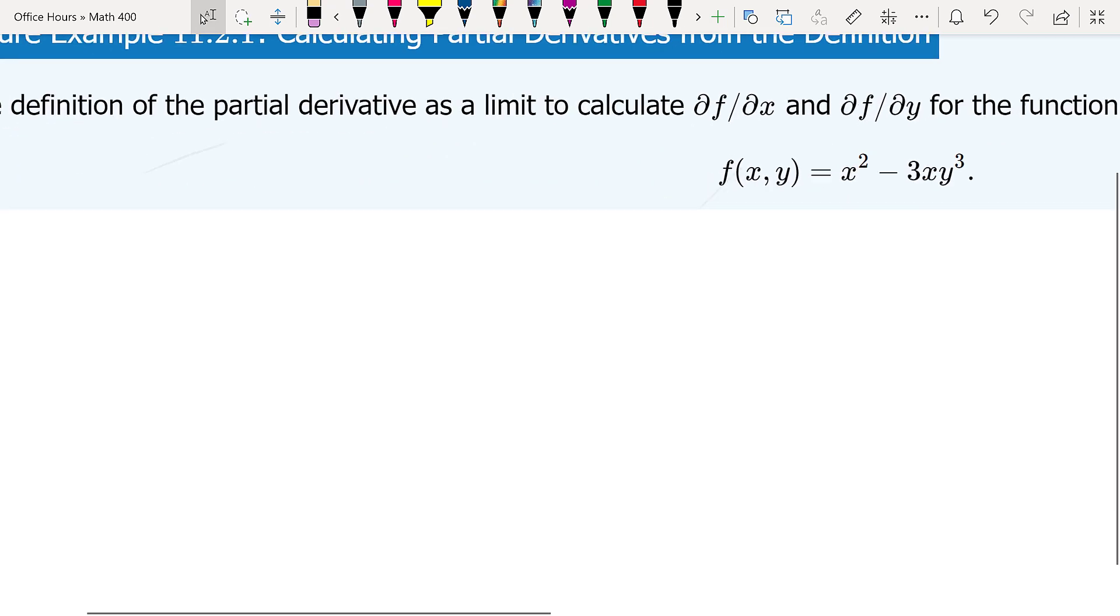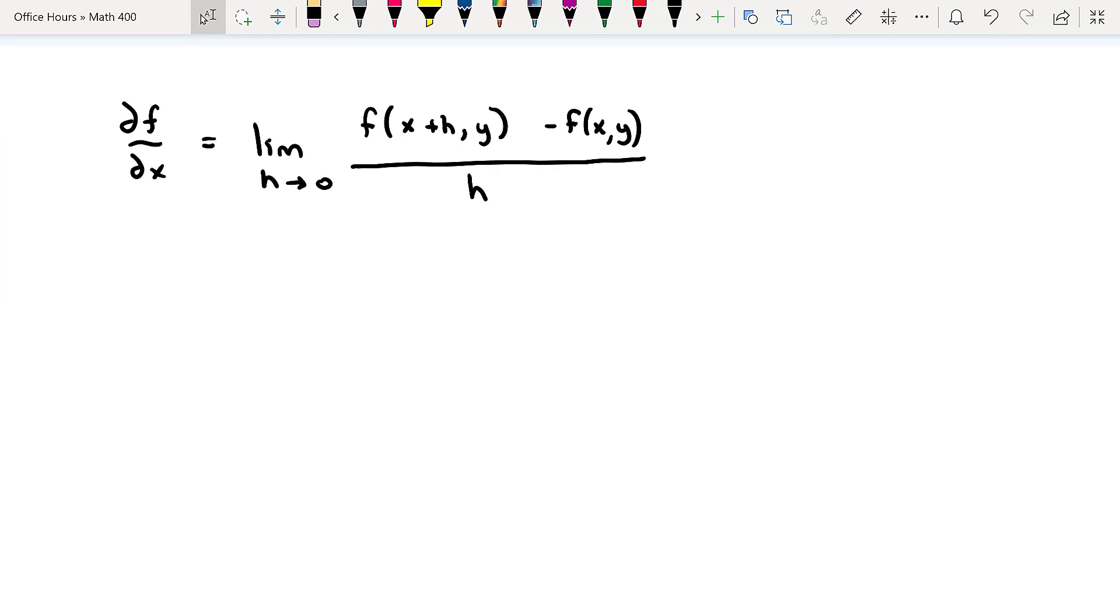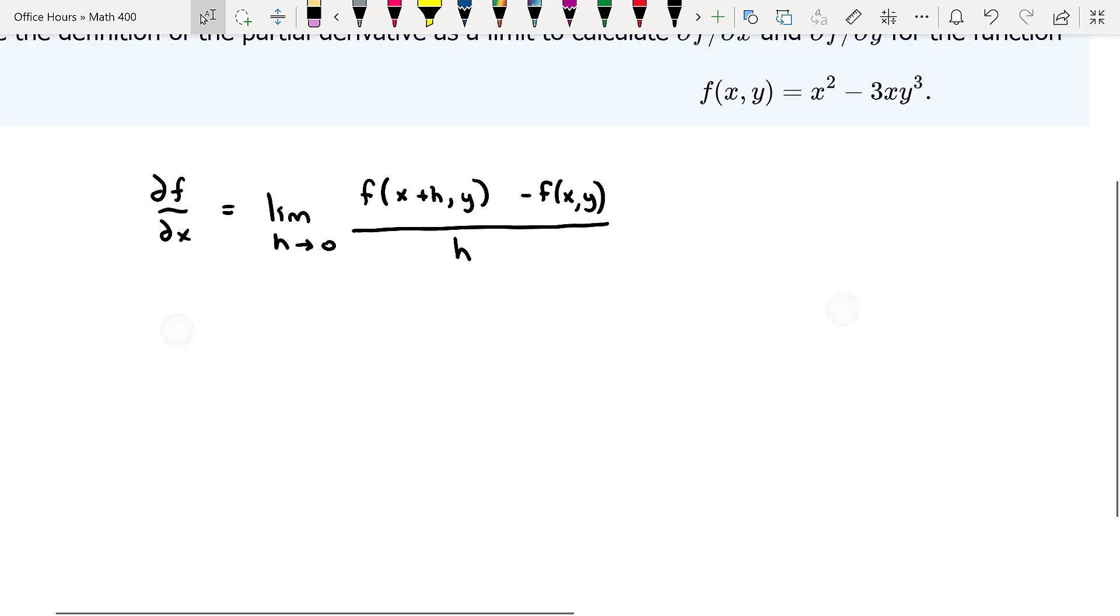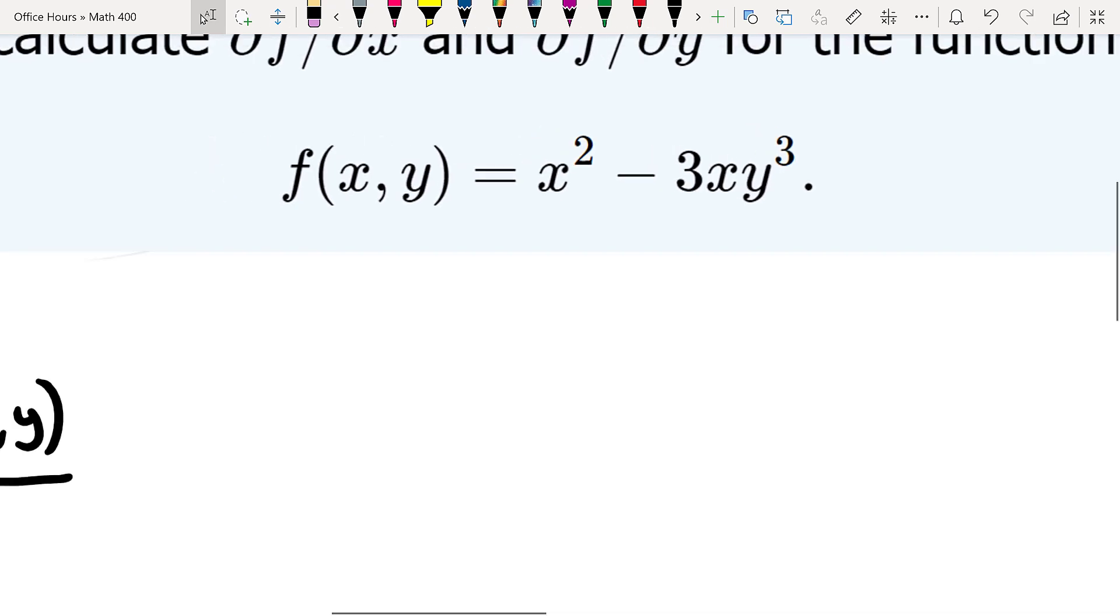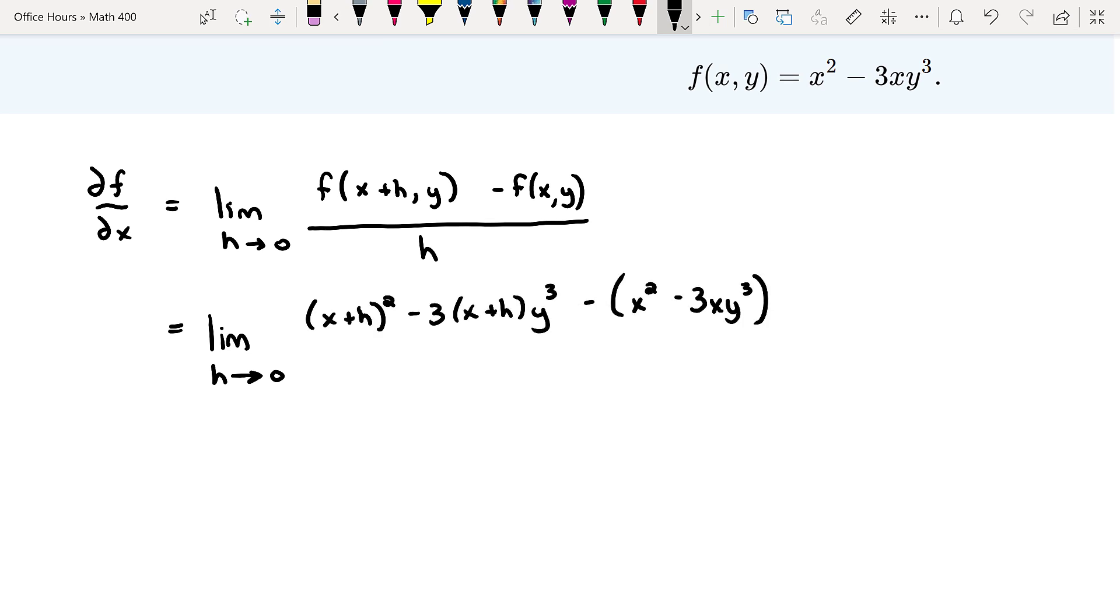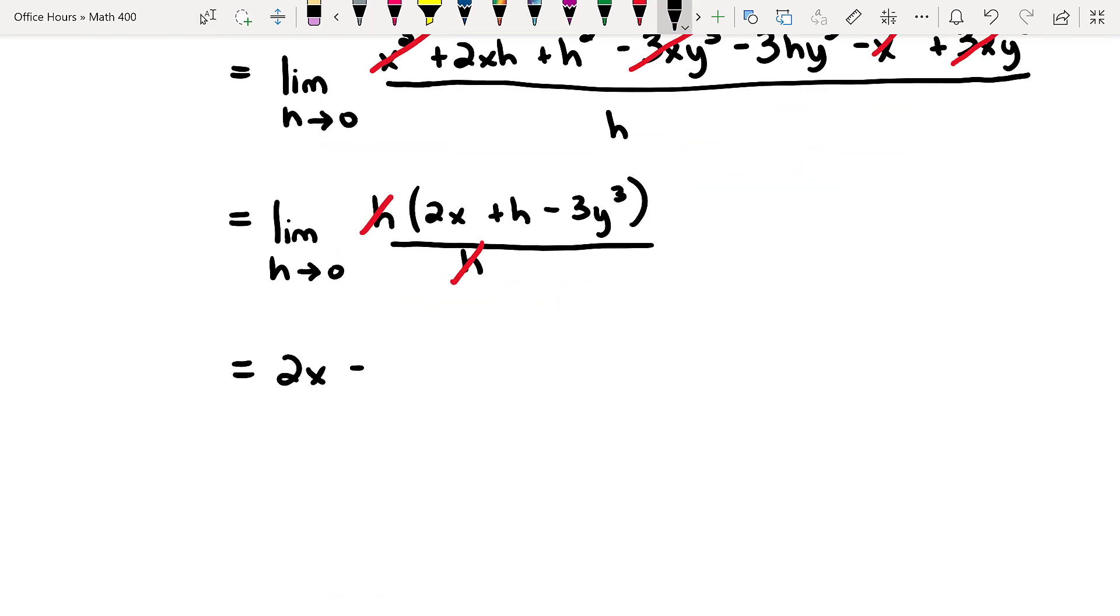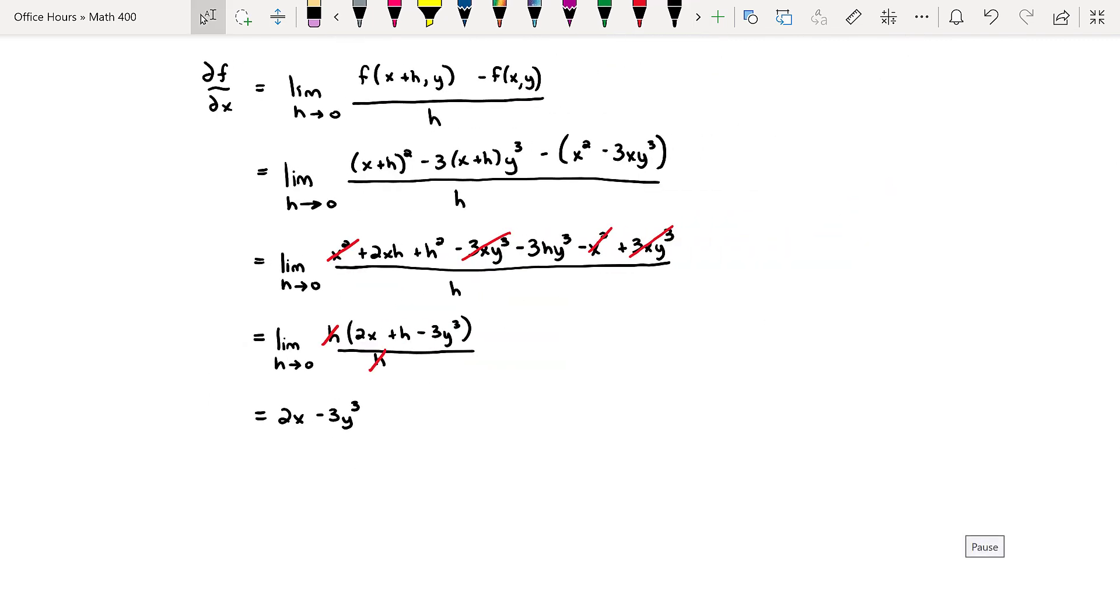Writing down the limit definition, you can see why I made a speedy computation video out of this - there's just a lot of handiwork here. Plugging in x+h for x and y for y, let's compute this out. We see that ∂f/∂x = 2x - 3y³. That's not too bad at all.